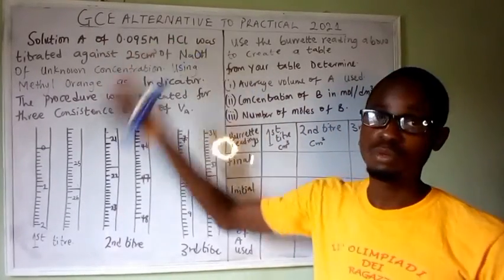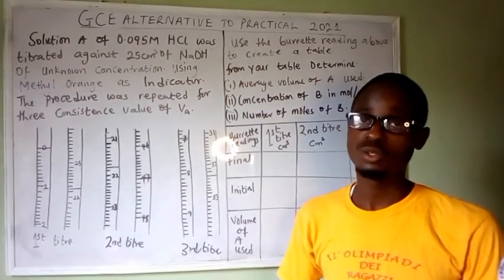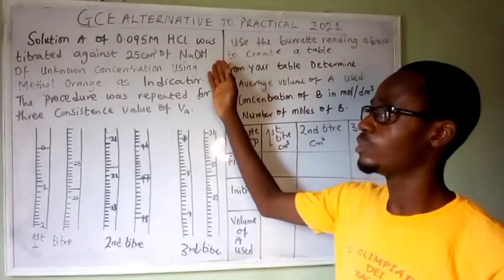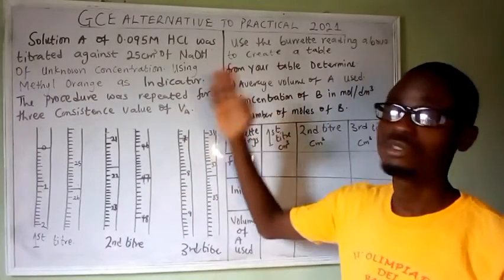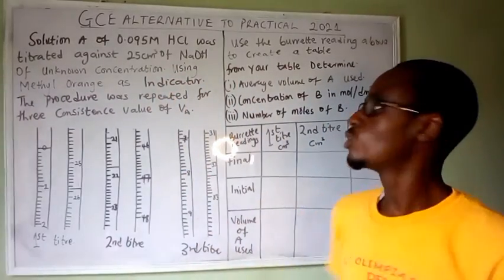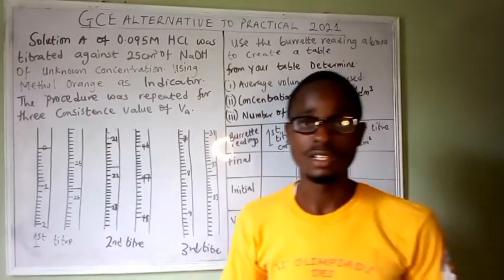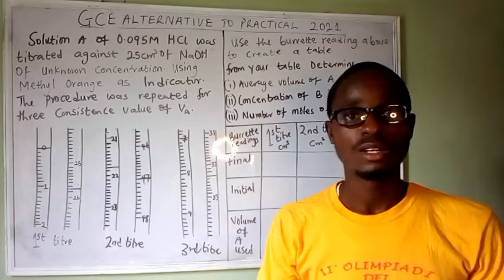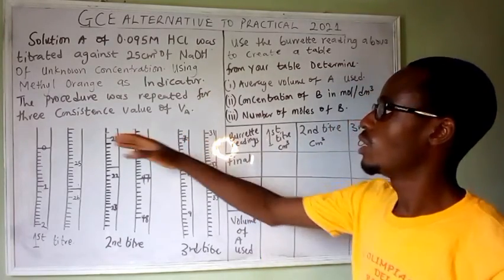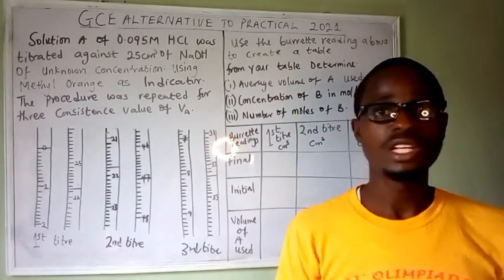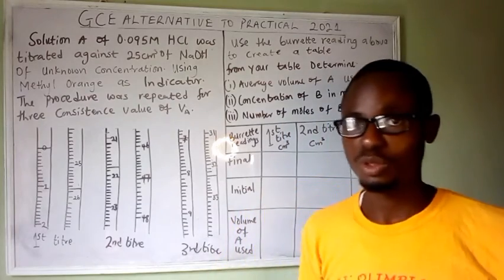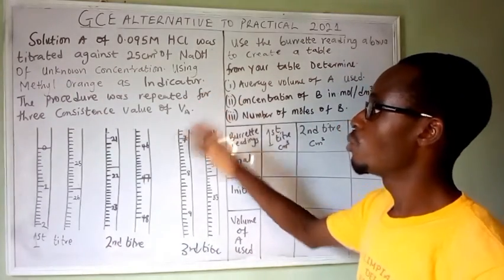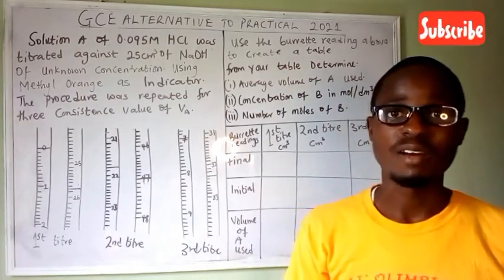We have solution A at 0.095 mol per dm³ - that is the molarity of HCl. So solution A is an acid. The solution of HCl was titrated against 25 cm³ of sodium hydroxide of unknown concentration, so the concentration of the base (sodium hydroxide) is unknown. Methyl orange is used as indicator, which supports the reaction between a strong acid and strong base. The procedure was repeated for three consistent values.